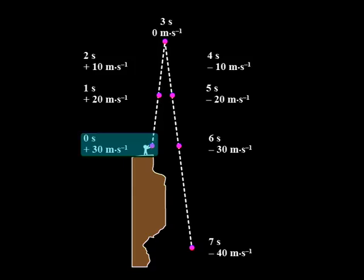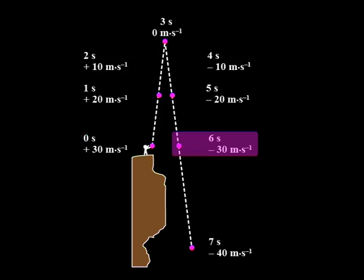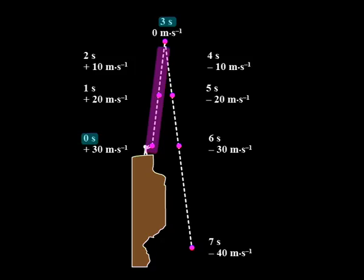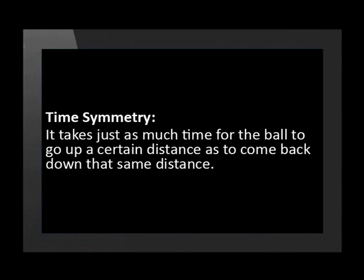Notice the upward and downward velocity of the ball at the same height — the magnitudes are the same. For example, when the ball leaves the thrower's hand its velocity is positive 30 meters per second upward, and when the ball moves through the same height on its way down its velocity is again 30 meters per second, this time negative 30 meters per second. There is also an interesting pattern in time: it takes three seconds for the ball to travel from the hand up to its highest point, and also three seconds to come back down to the hand. We call this time symmetry.